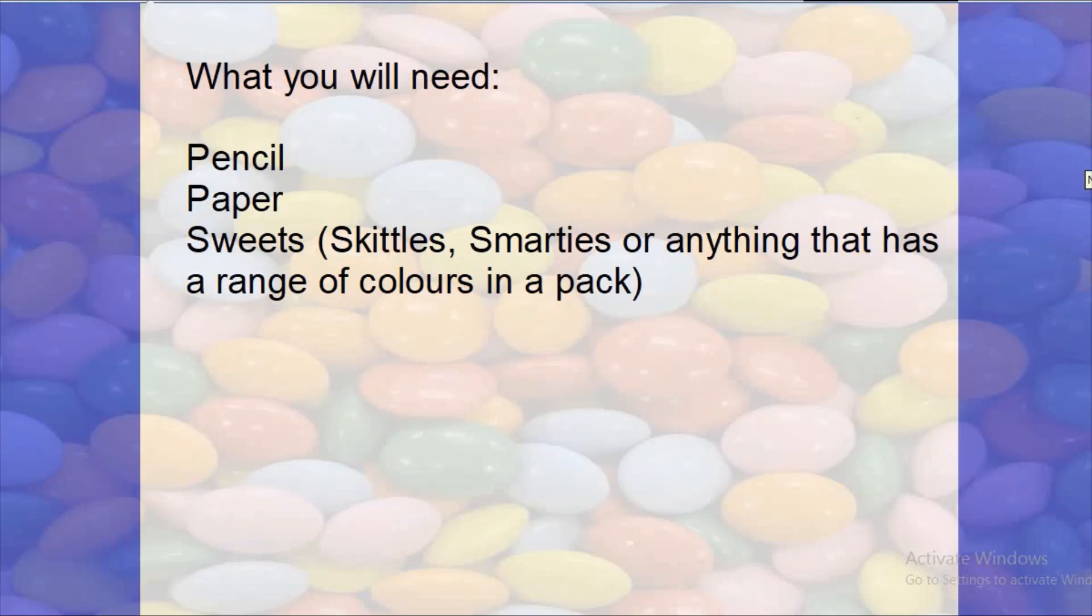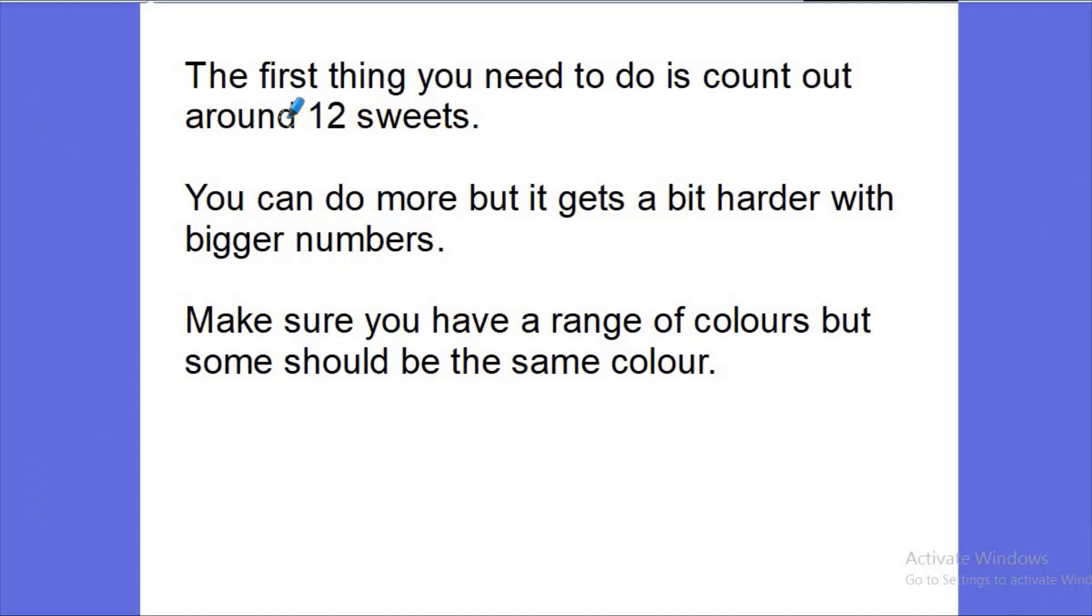We're going to practice our fractions, decimals, and percentages. The first main event is that you are going to need to count out around 12 sweets. You can do more if you want it a bit harder, or less if you want it easier. You know what you're capable of. Make sure you have a range of different colors, but some of them should be the same color. If you need to pause this and count out your sweets, please do so. I will pause for a minute—you can pause, then come back when you've got your sweets ready.